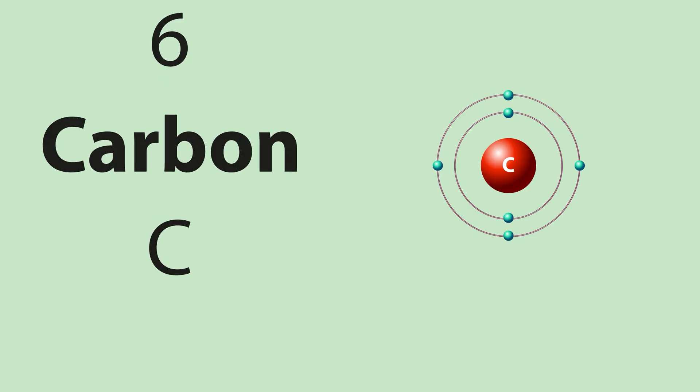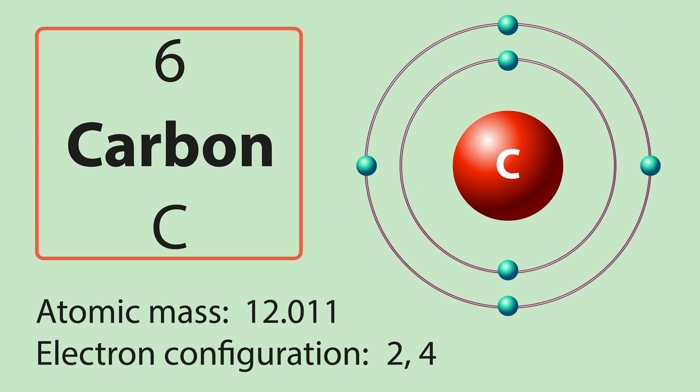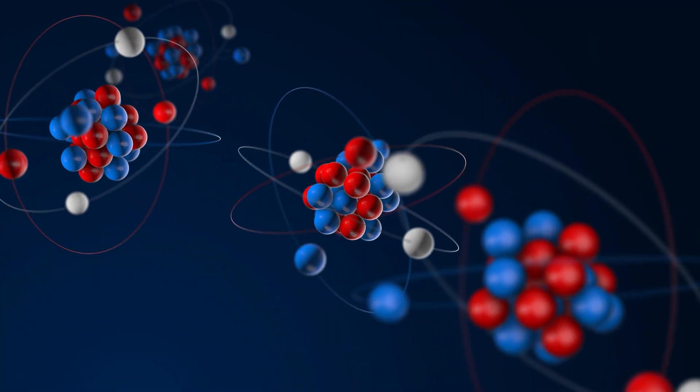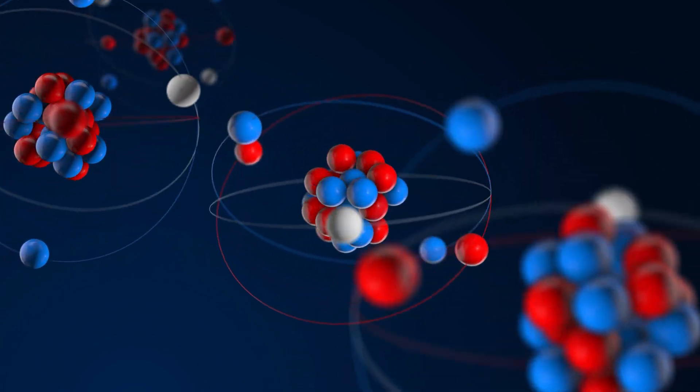An element's atomic weight is the number found on the periodic table and is determined by averaging the weight of all of the different versions or isotopes of a particular element.